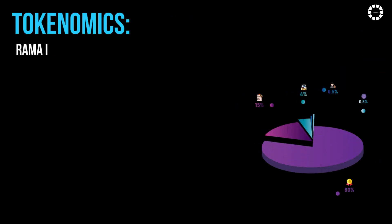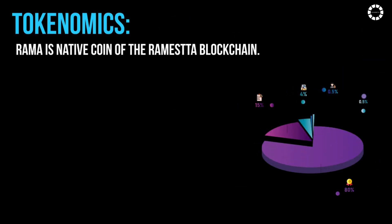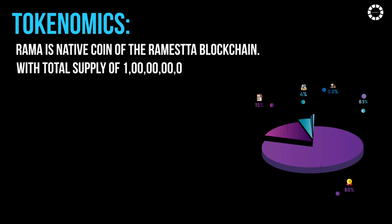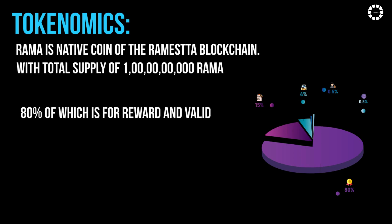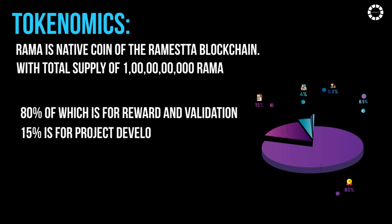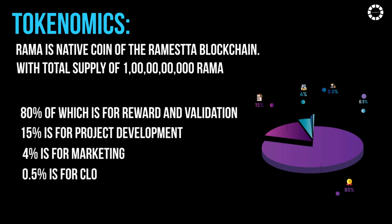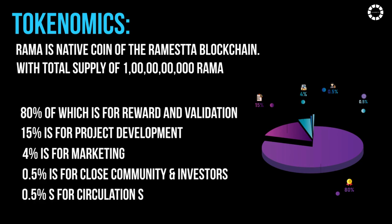Tokenomics: Rama is the native coin of the Romesta blockchain, with a total supply of 1 billion Rama. 80% is for reward and validation, 15% is for project development, 4% is for marketing, 0.5% is for close community and investors, and 0.5% is for circulation supply.